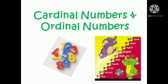Now students, what we are going to learn? We are going to learn cardinal numbers and ordinal numbers. Cardinal numbers are: 1, 2, 3, 4, 5, 6, 7, 8, 9, 10 — these all are cardinal numbers. And 1st, 2nd, 3rd, 4th — these all are ordinal numbers.